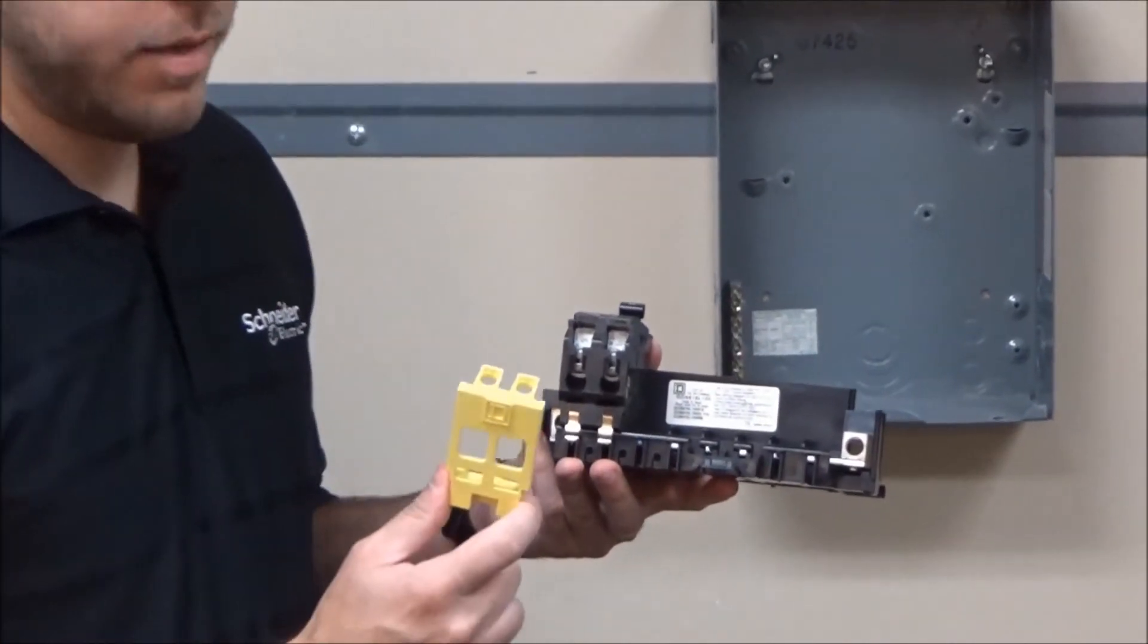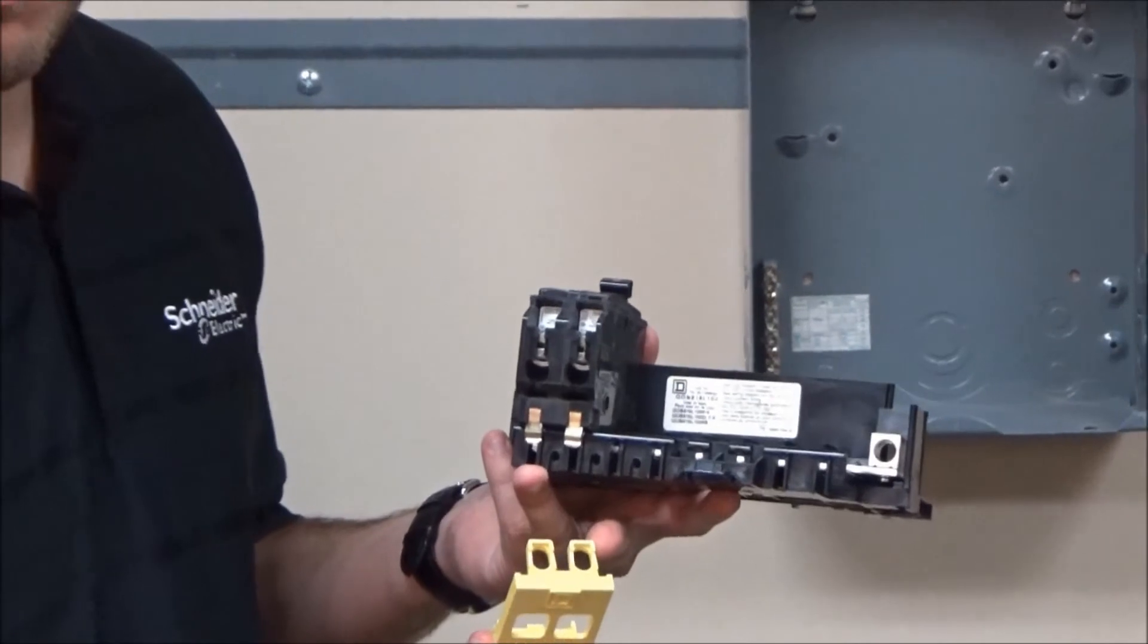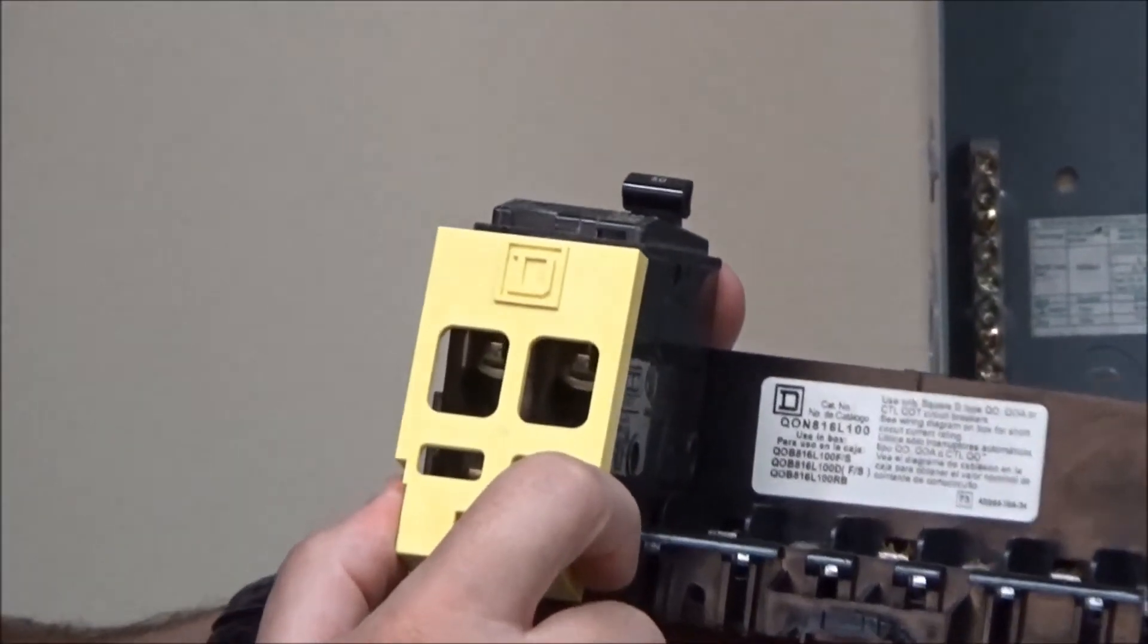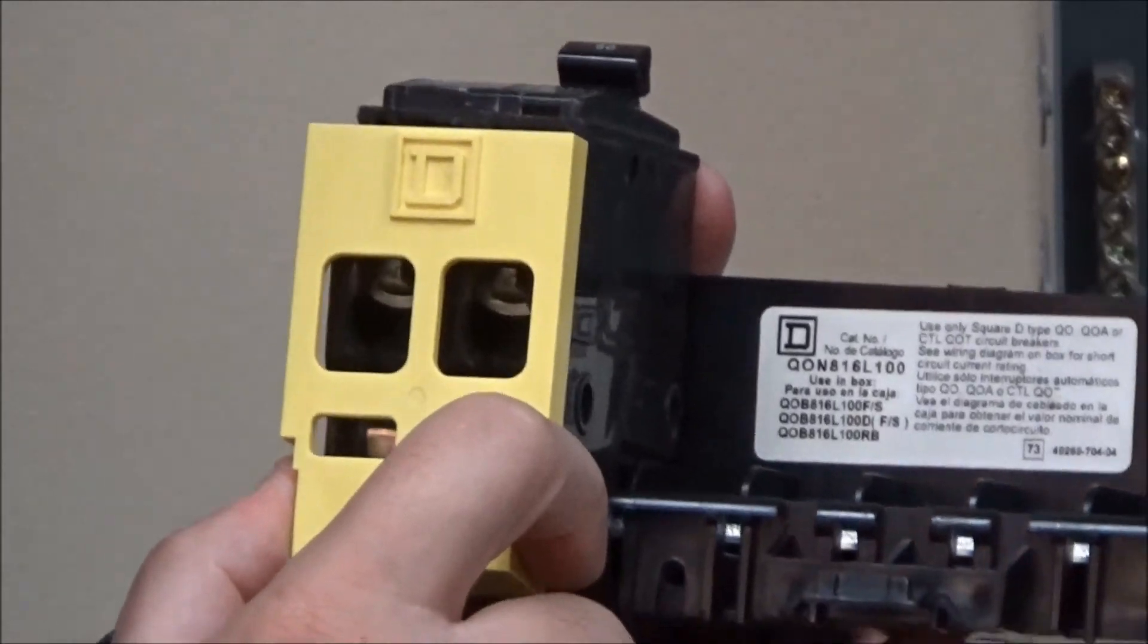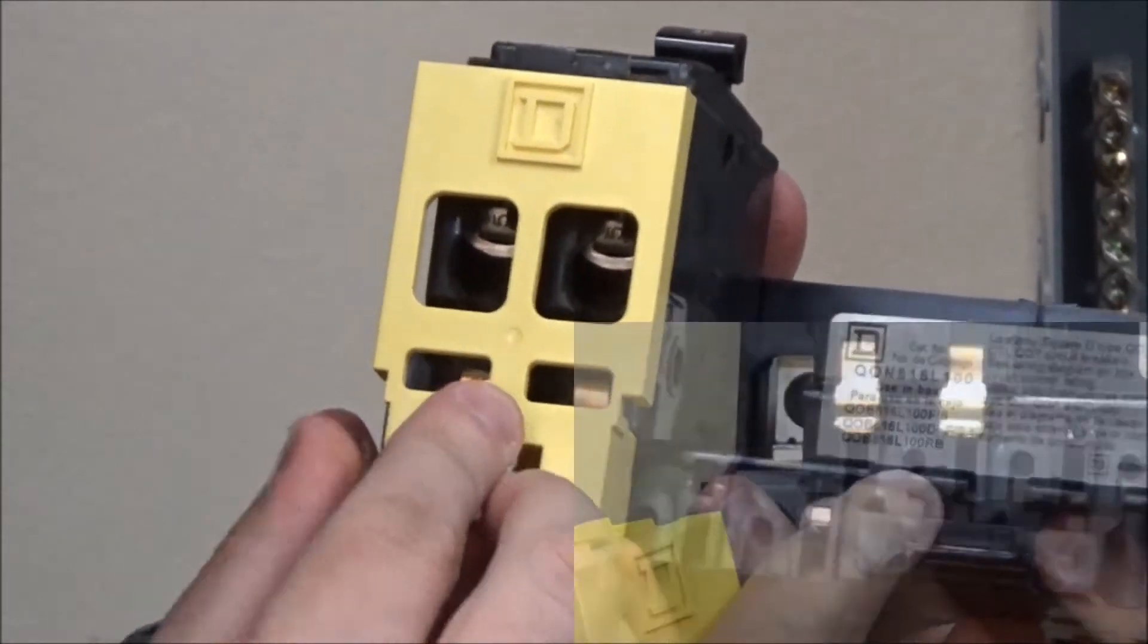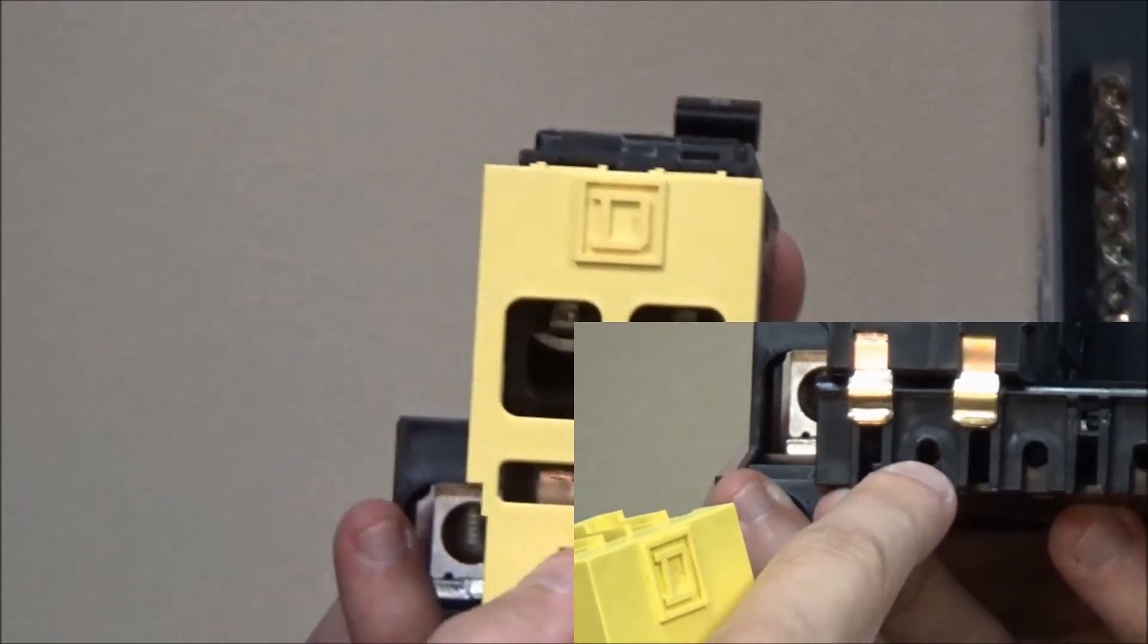When you take your barrier kit, take the tabs from the barrier and insert them into the slots on the QO breaker. Then take the mounting screw and install it into the hole on the interior base assembly.